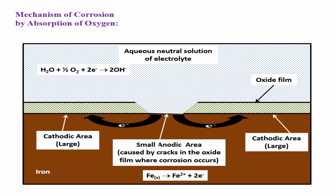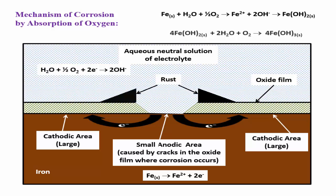Fe2+ ions formed at the anode react with 2OH- ions from the cathode to give Fe(OH)2. This Fe(OH)2 is unstable and reacts with water and oxygen to give Fe(OH)3, called yellow rust.